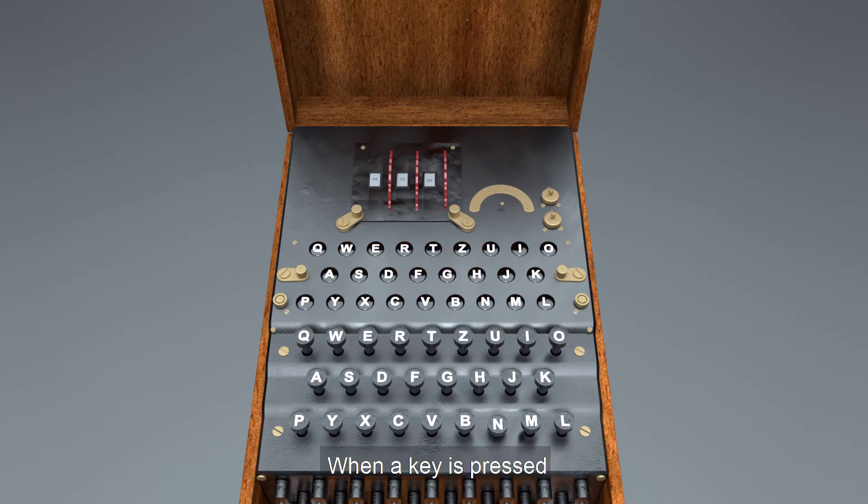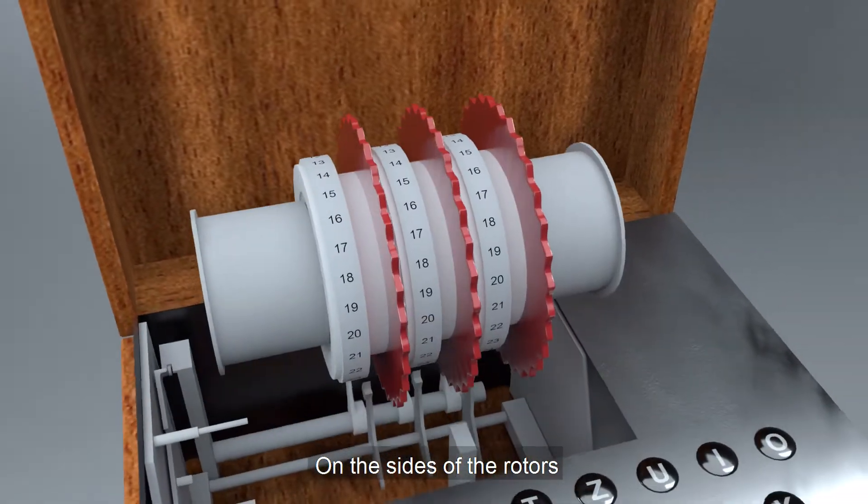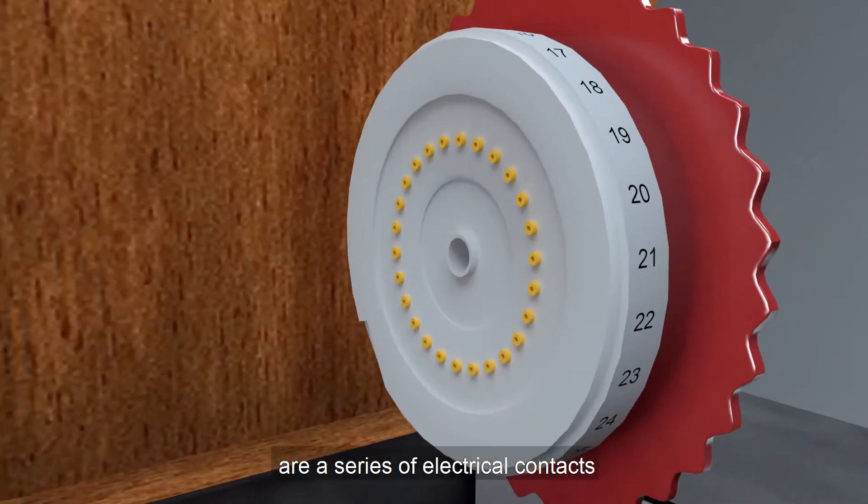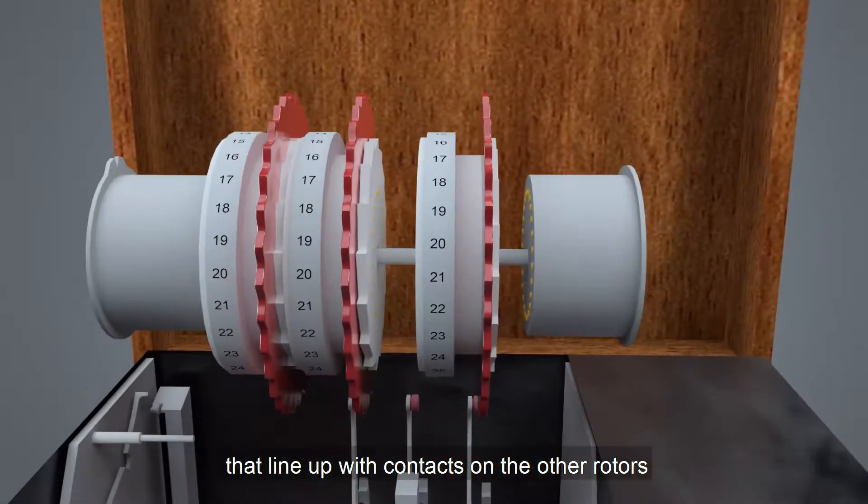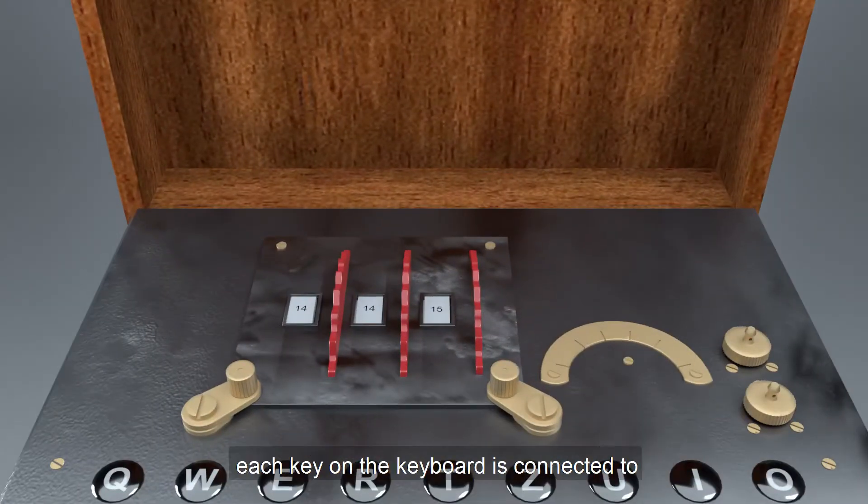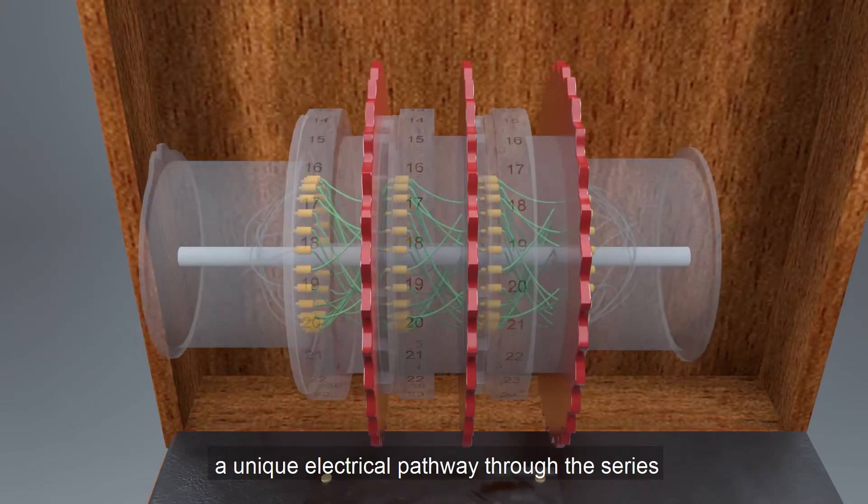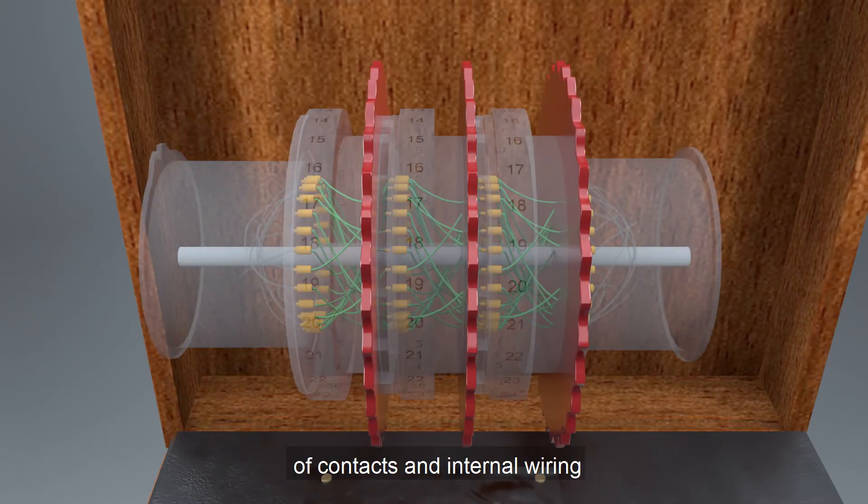When a key is pressed, one or more rotors rotate on the spindle. On the sides of the rotors are a series of electrical contacts that line up with contacts on the other rotors. When rotors are properly aligned, each key on the keyboard is connected to a unique electrical pathway through the series of contacts and internal wiring.